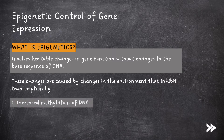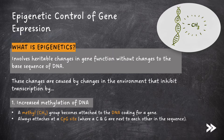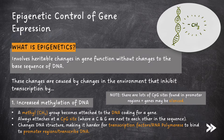In increased methylation of DNA, a methyl CH3 group becomes attached to the DNA coding for a gene. The methyl group always attaches at a CPG site, where a cytosine base and a guanine base are next to each other in the sequence. The binding of the methyl group changes the DNA structure, making it harder for transcription factors to bind to promoter regions, or for RNA polymerase to transcribe DNA. Note that there are lots of CPG sites found in promoter regions, meaning that genes may be silenced.